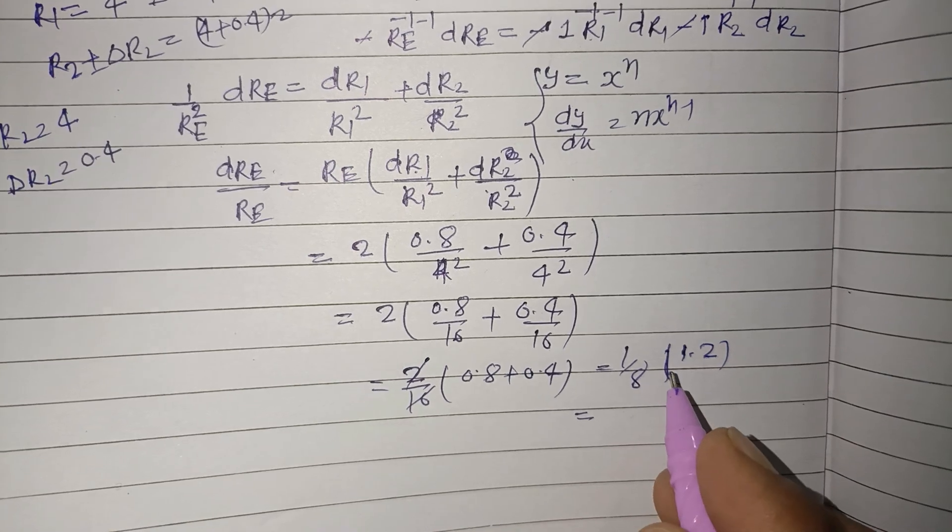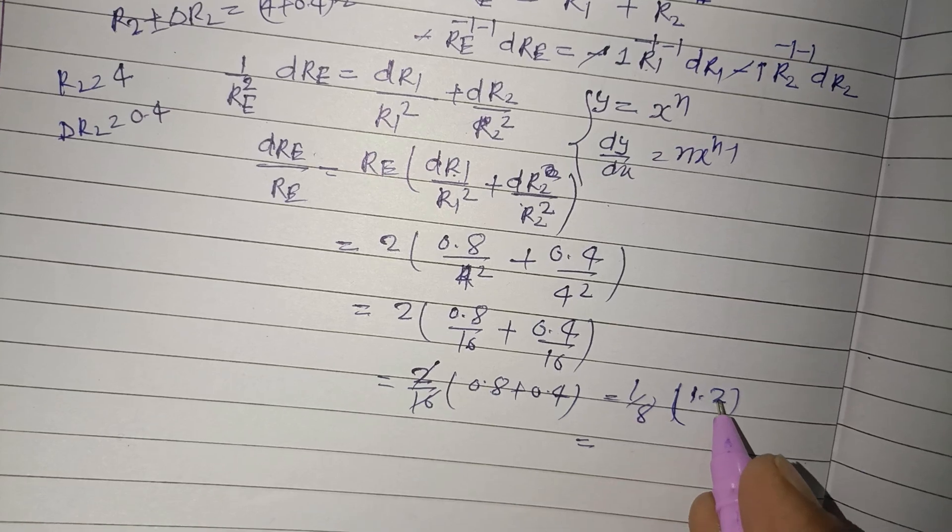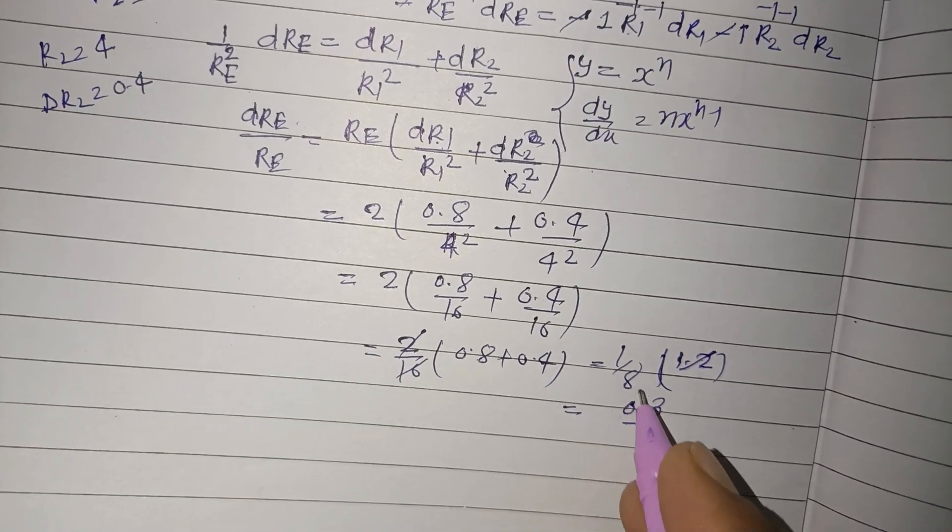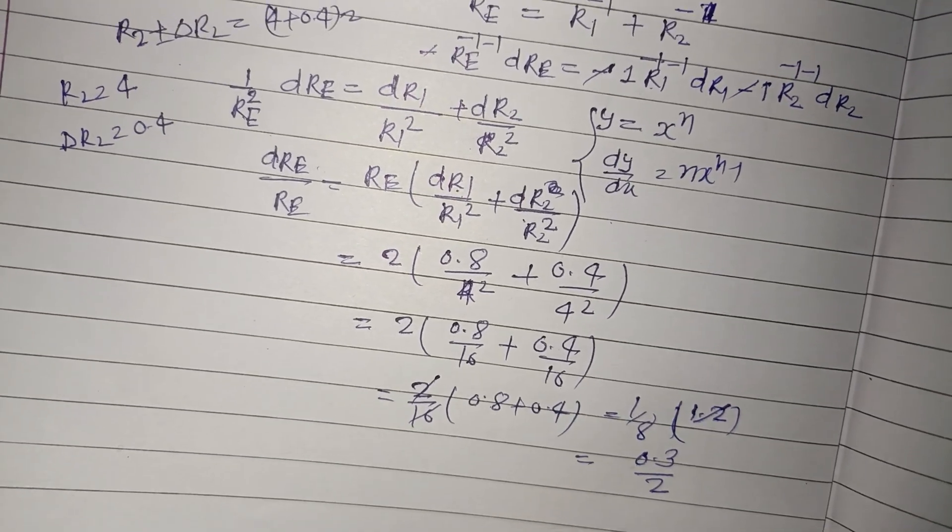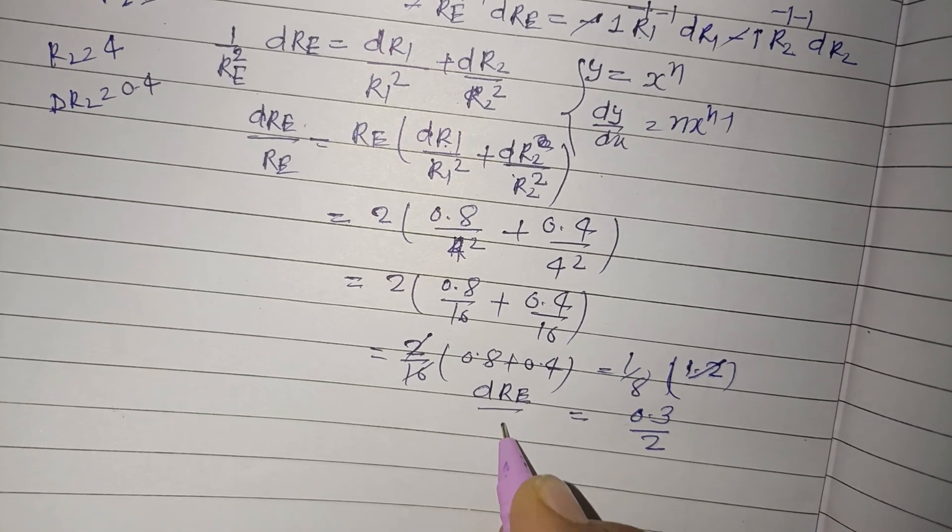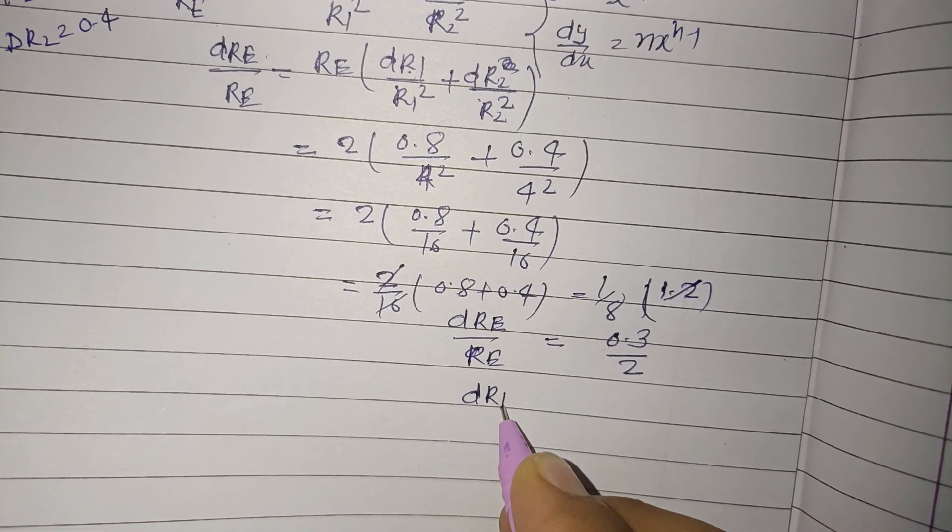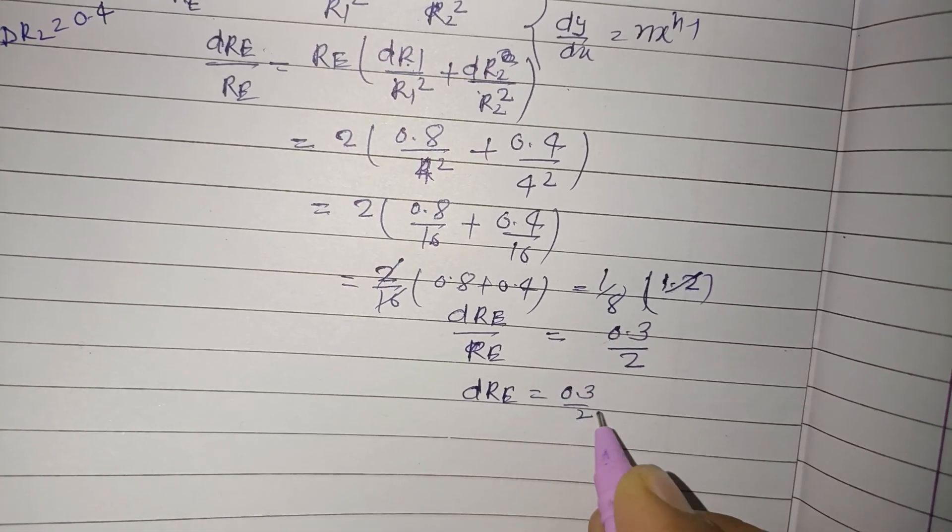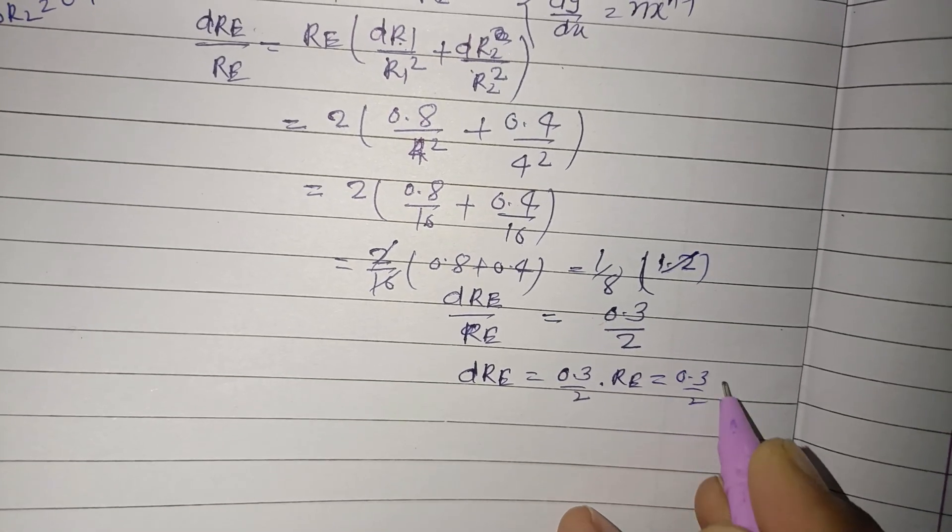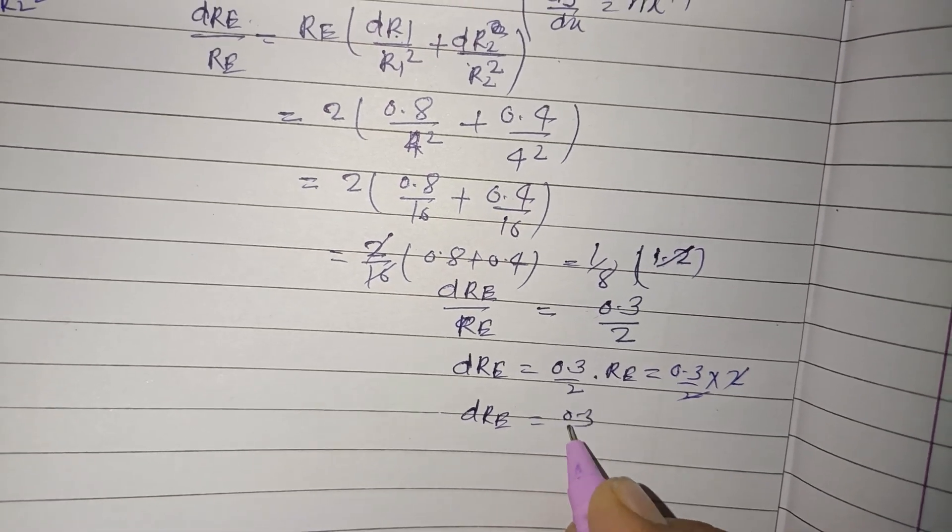So we are simplifying this. Here dRE over RE, so you can get dRE from here, 0.3 by 2 into RE. 0.3 by 2, RE is 2. So dRE equal to 0.3.